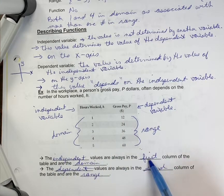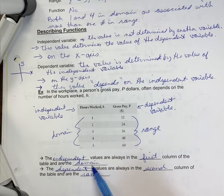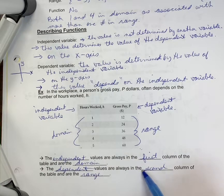The independent values are always in the first column of the table and are the domain. The dependent values are always in the second column of the table and are the range.